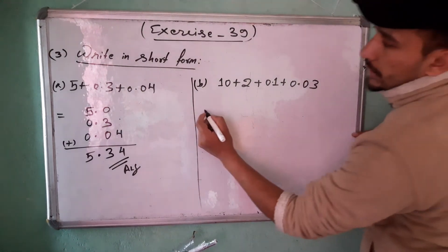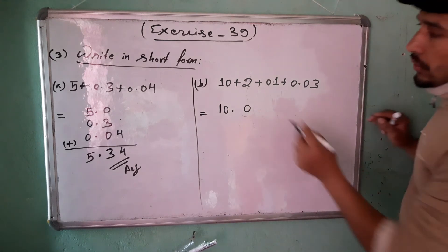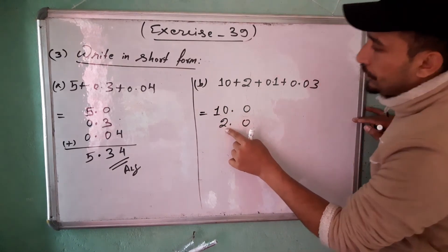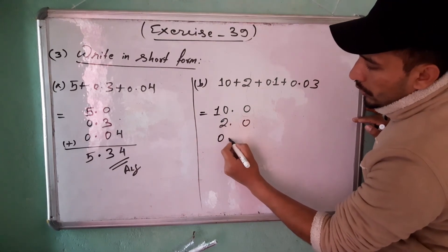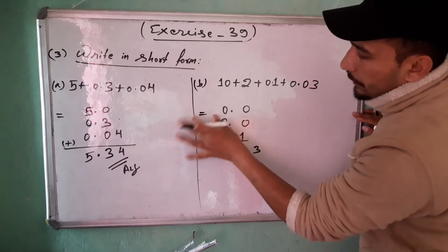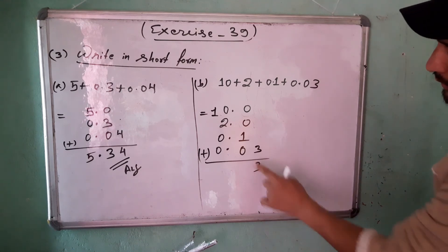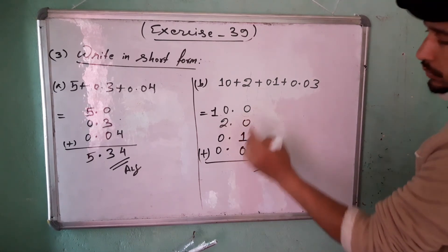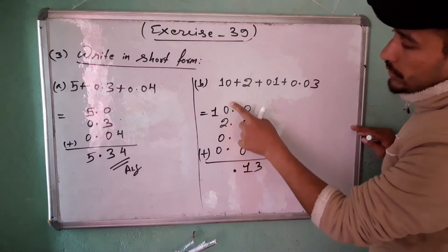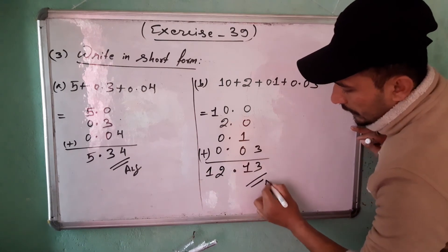Next is 10 plus 2 plus 0.1 plus 0.03. Write 10.0, then 2.0 below zero, then 0.10, then 0.03. Do the addition: 3 plus nothing is 3; 0 plus 1 is 1; decimal point stays; 0 plus 0 plus 2 plus 0 is 2; then 1. The answer is 12.13.